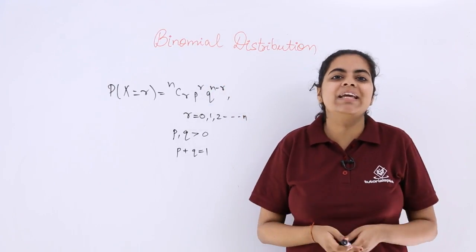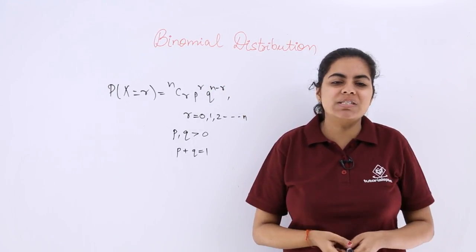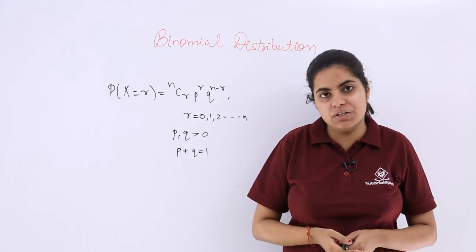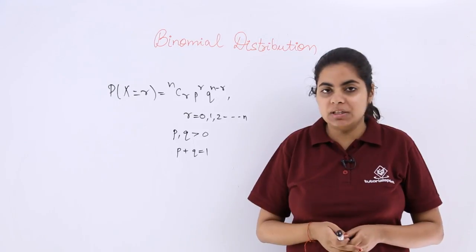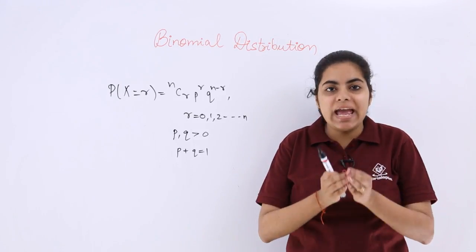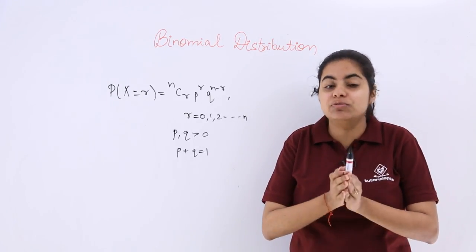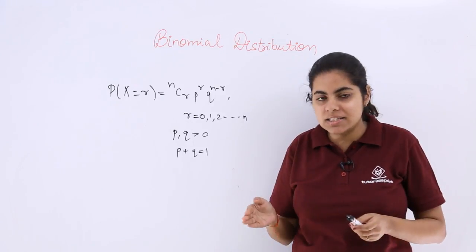Binomial distribution is the topic. We'll see the definition of binomial distribution. Let x be the random variable with n different trials. For n trials and r successes,